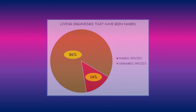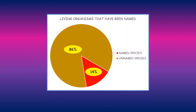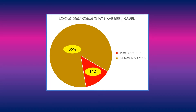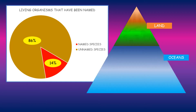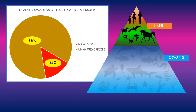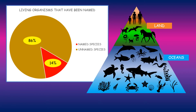It is thought that scientists have named only 14% of living organisms. This means that approximately 86% of living organisms still need to be identified. Most of the living organisms that have been named live on land. There are many living organisms that live in the oceans that still need to be discovered.